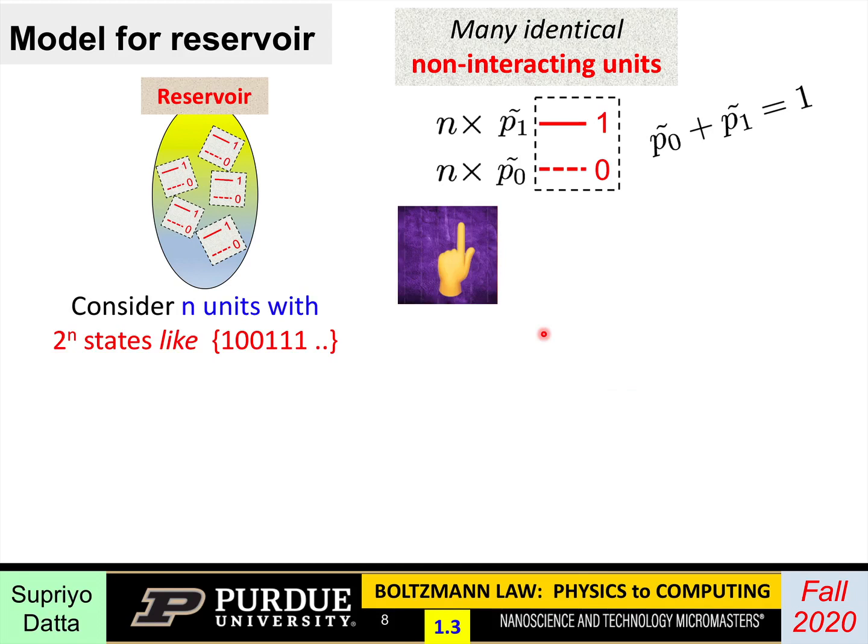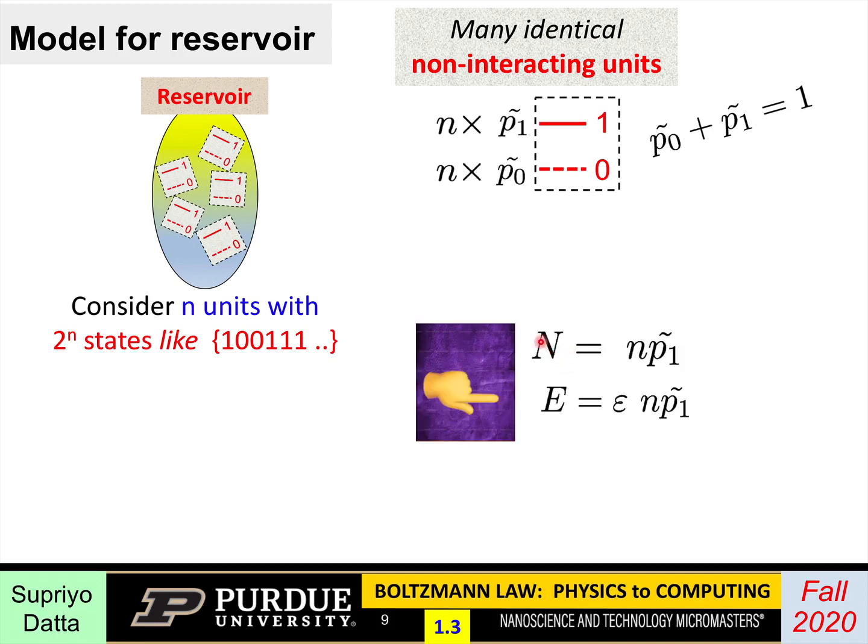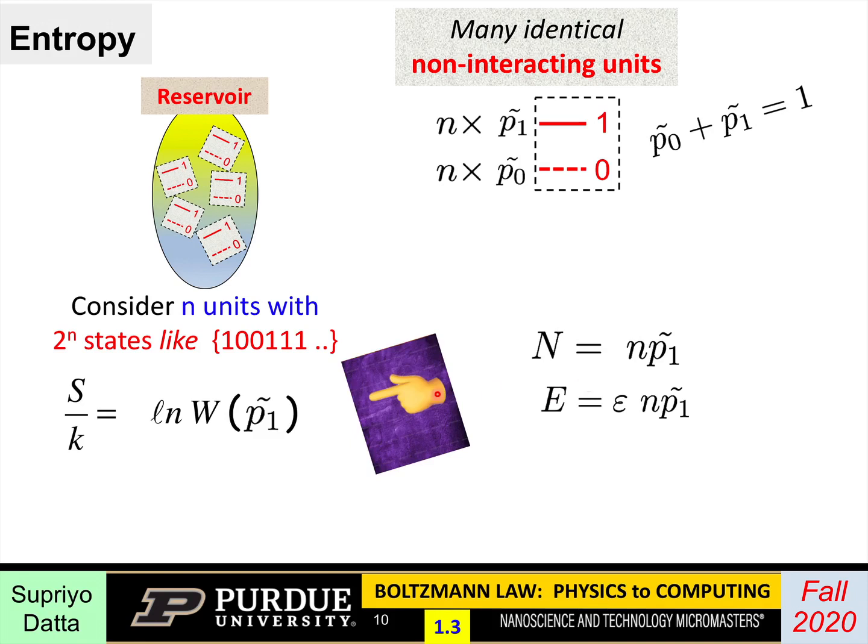Now consider n units. So there will be 2 to the power n states. Each one could be described by a string of ones and zeros. And the number of units that will be in state 1 will be n times p1, the total number times p1. The energy will be epsilon times n times p1, where epsilon is the energy corresponding to 1 relative to the 0. Now we write the entropy, that's this k log W, k being the Boltzmann constant. And W is the number of different states that correspond to a particular, for a given p1, the number of different states that correspond to it.